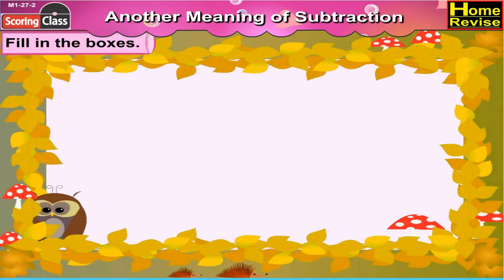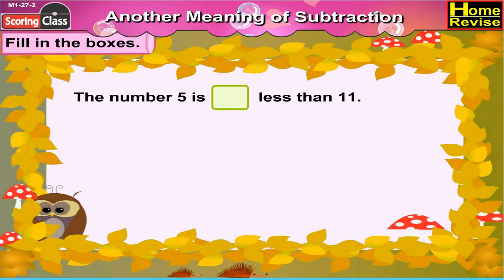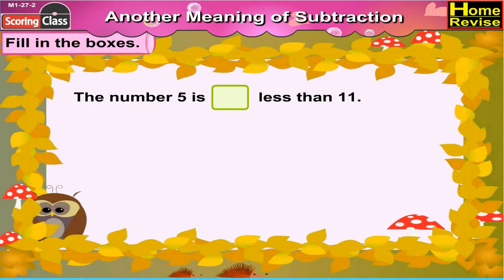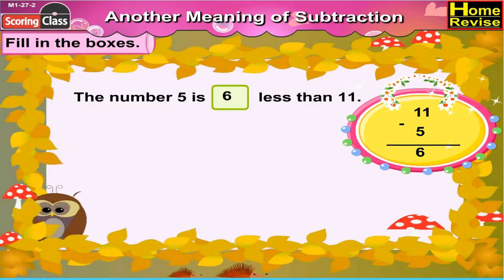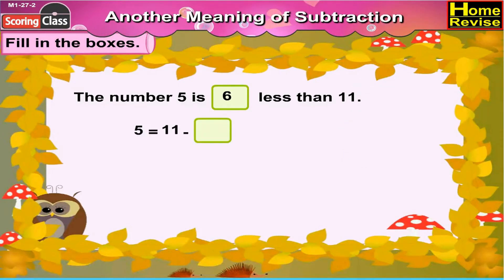Fill in the boxes. The number 5 is blank less than 11. Now, kids, what do you think? Is number 5 bigger or smaller than 11? Yes, it is smaller. And by how many? You are right, by 6. So the number 5 is 6 less than 11. Now, 5 is equal to 11 minus how many? That's correct. 5 is equal to 11 minus 6.